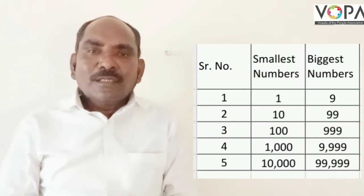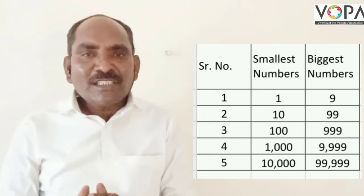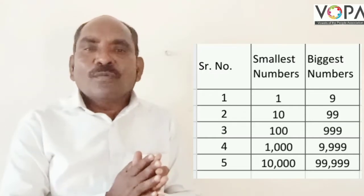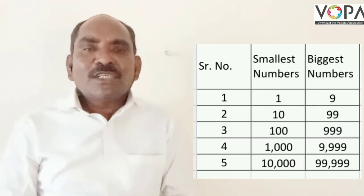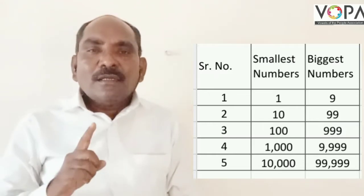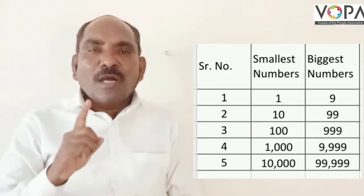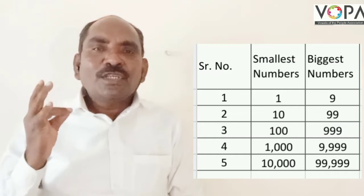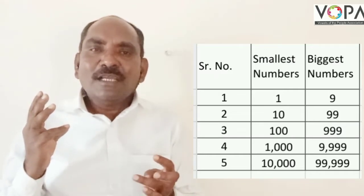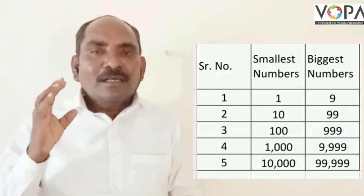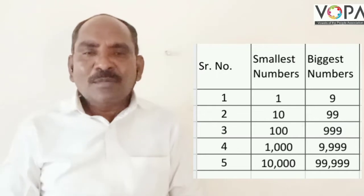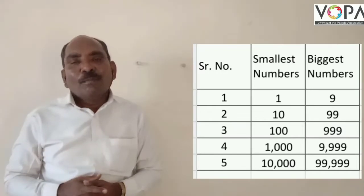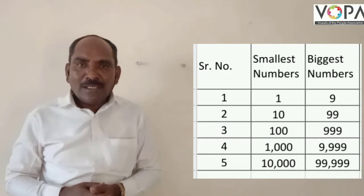Today, we are going to learn the smallest 1-digit number and the biggest 1-digit number. The smallest 1-digit number is only 1. When we count 1, 2, 3, 4, 5, 6, 7, 8, 9 — these are the units. It means 1 is the smallest number and 9 is the biggest number in the unit.